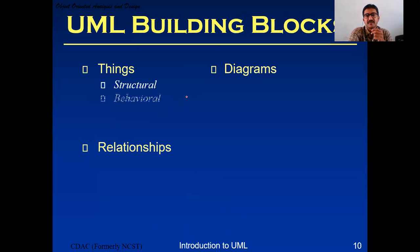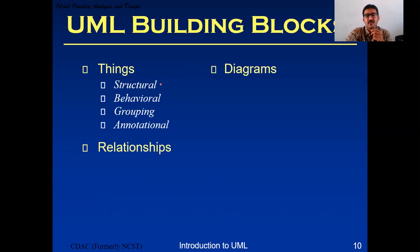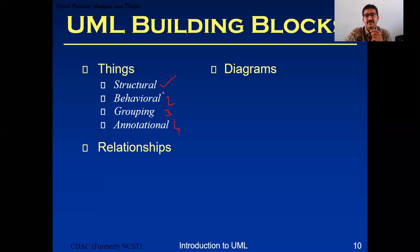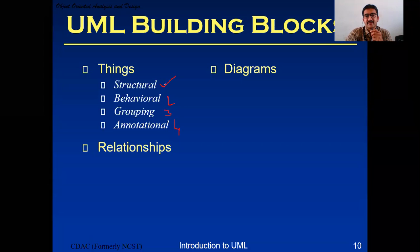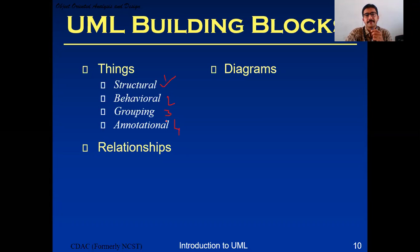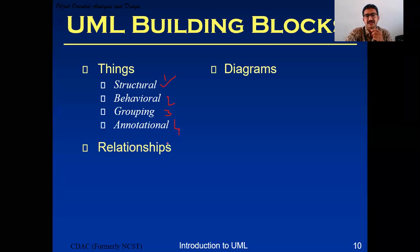Coming to the things: we have three types of building blocks - things, relationships, and diagrams. In things, we have four types: first structural, second behavioral, third grouping, fourth annotation.